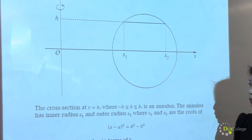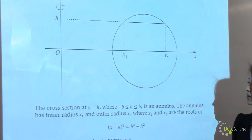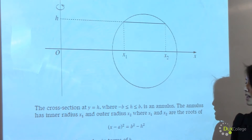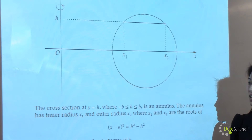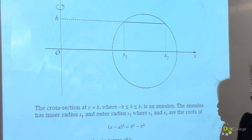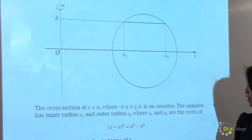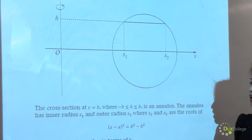The cross-section at y equals h, where h is between minus b and b, is an annulus. The annulus has inner radius x1 and outer radius x2, where x1 and x2 are the roots of the given equation.